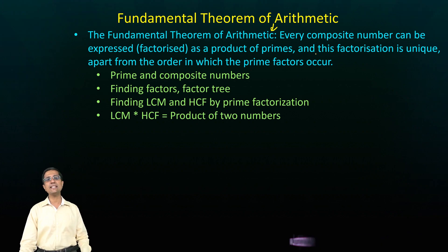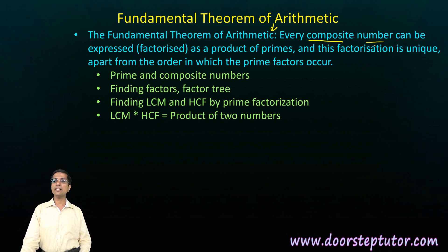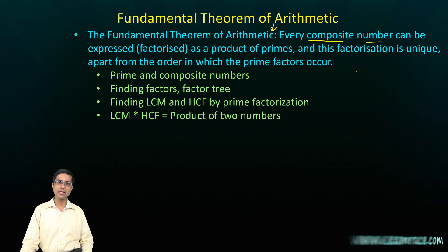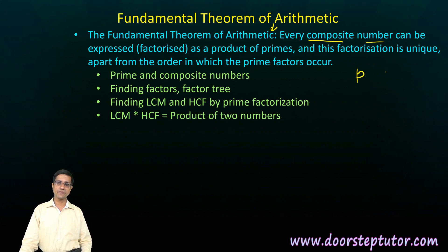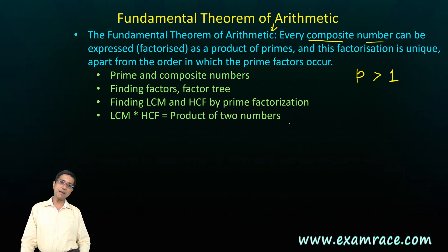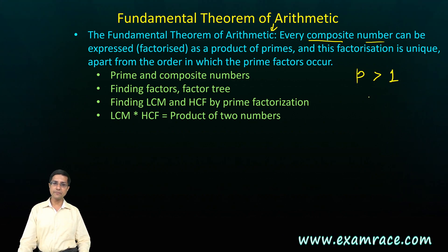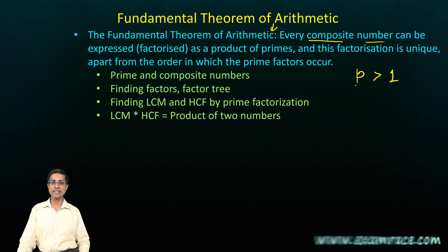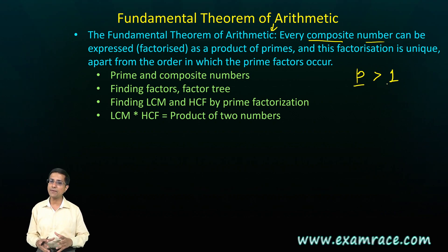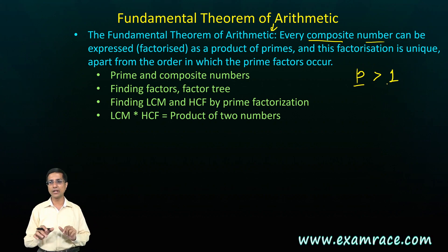The Fundamental Theorem of Arithmetic states that every composite number can be factored. Let's first understand what prime and composite mean. A prime number P is a number greater than one — note that one is neither prime nor composite. A prime number has only two factors: the number itself and one.